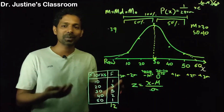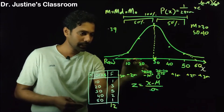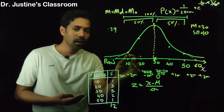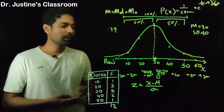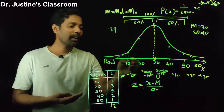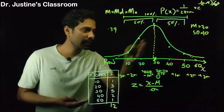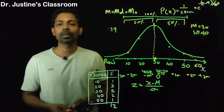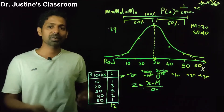This looks simple, but what is the real application? At any given point — say I need to find out how many people have a score more than 15 — if the data is normally distributed, I can calculate the area under the normal curve from that point to the end and find out how many people would be there. This particular property is the most important application of the normal curve.